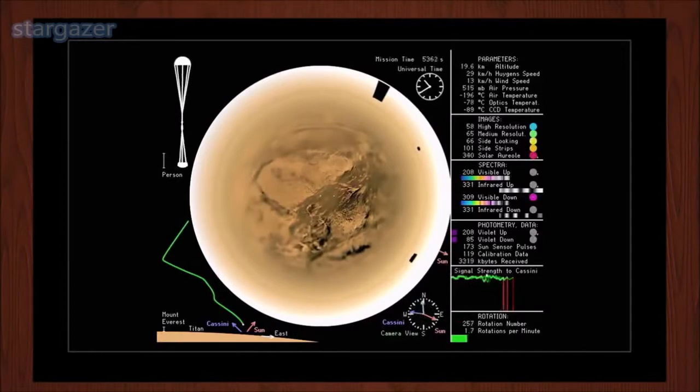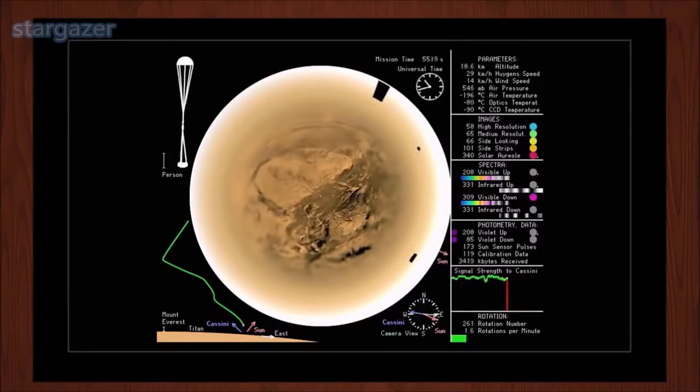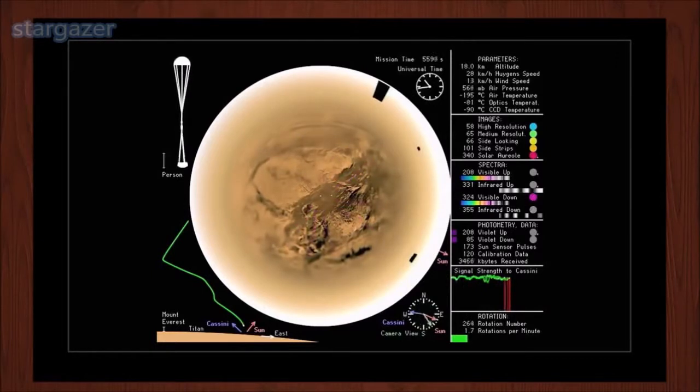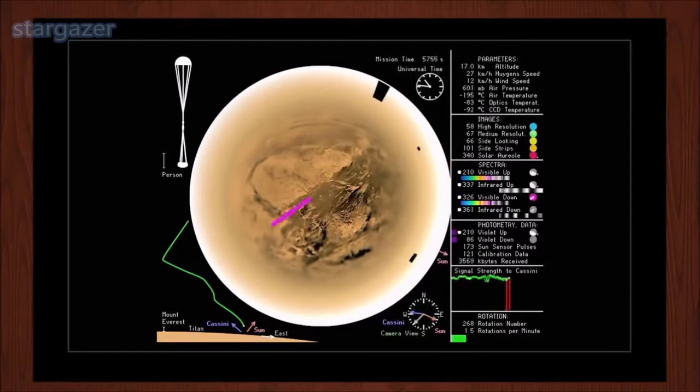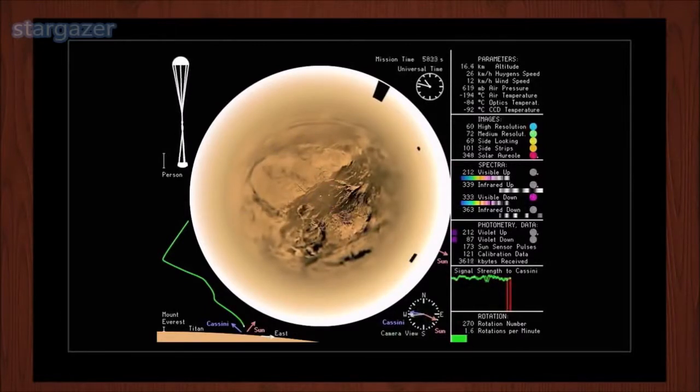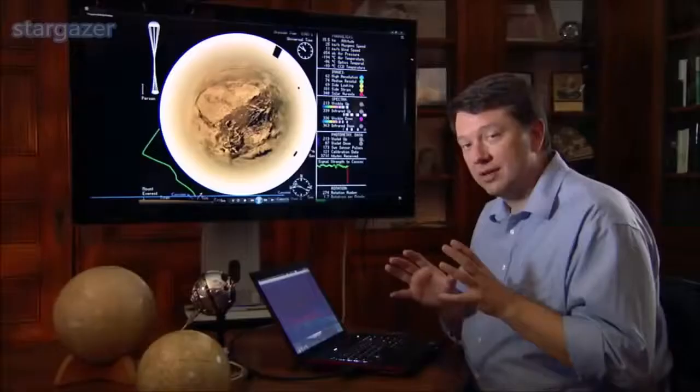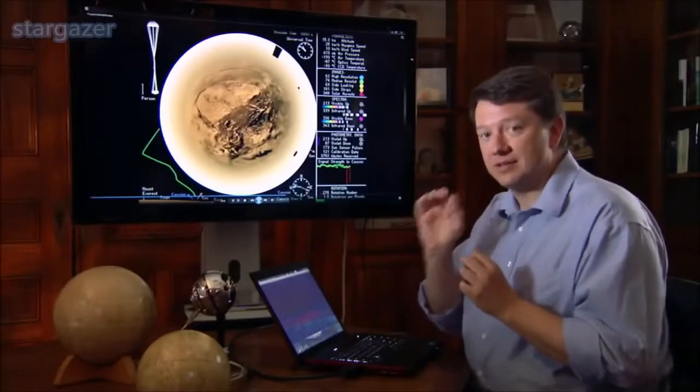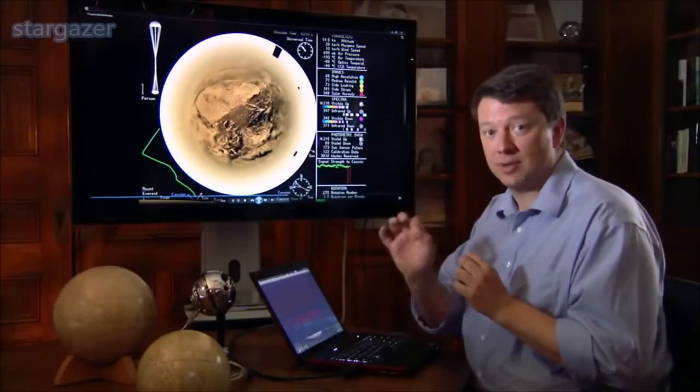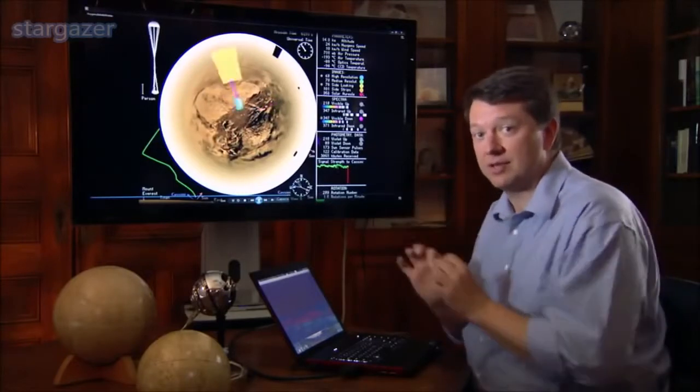Just as a Geiger counter announces radioactivity using audible clicks, the instruments on the Huygens lander were given their own sounds to register the measurements they were taking. Those chimes you hear, each one of those means that an instrument was taking a picture or some other kind of data. Different instruments are a different chime.